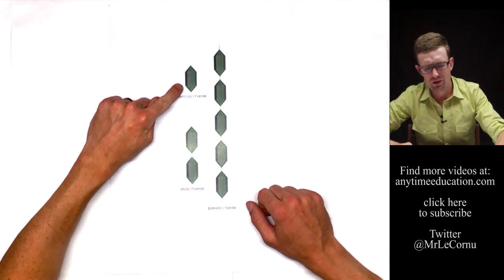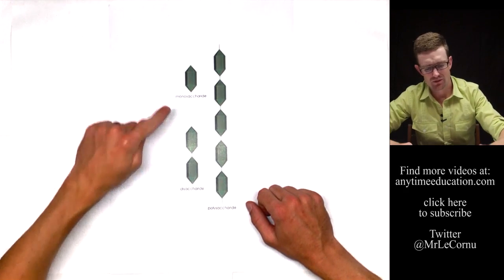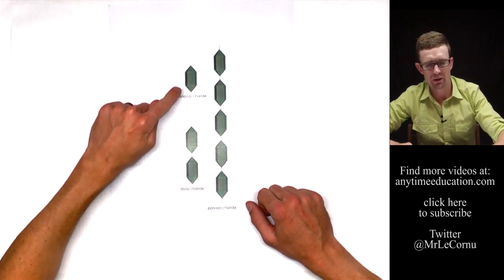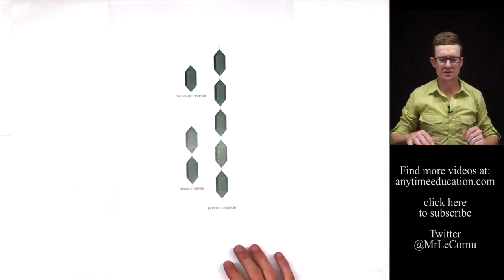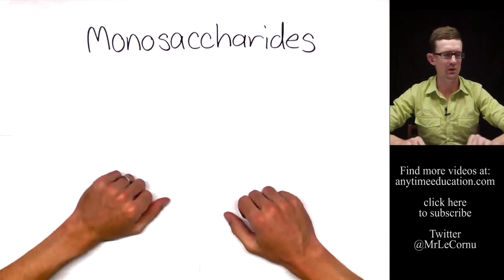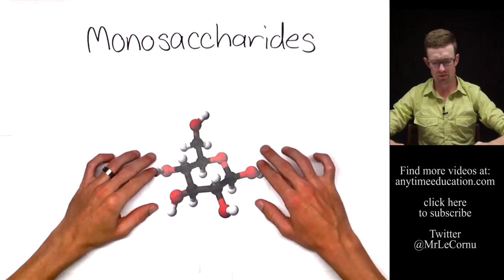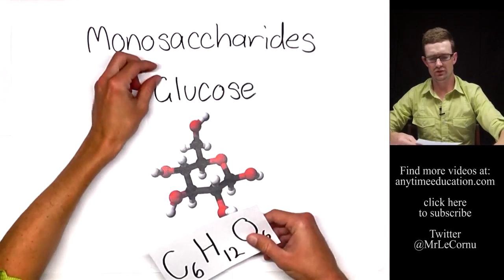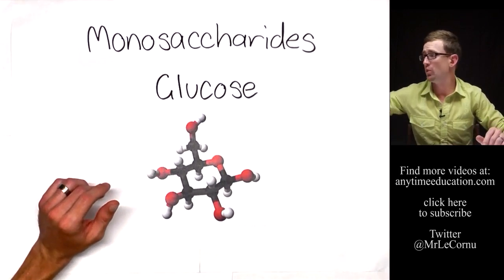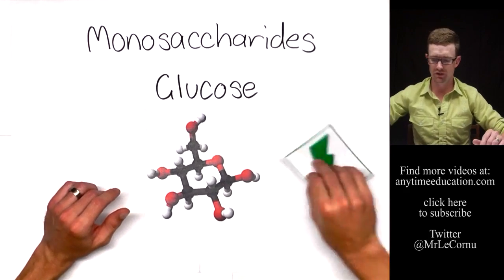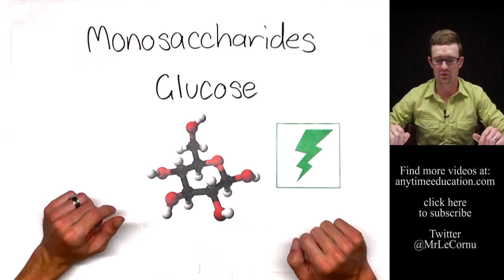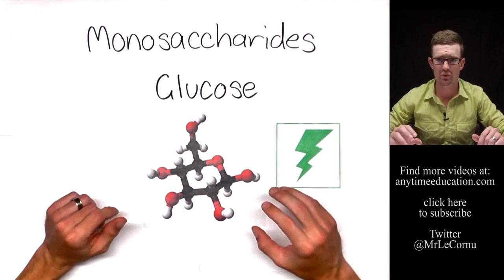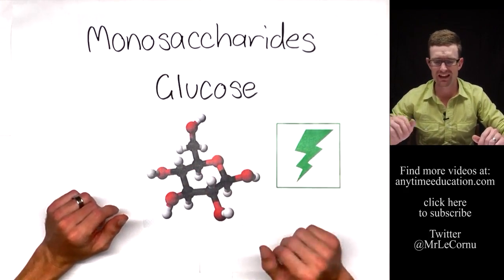We call the smaller subunits monosaccharides and disaccharides — mono meaning one, di meaning two. An example of a monosaccharide is glucose. Glucose is a very important source of energy for living things — it's a critical molecule as a source of energy for living things.